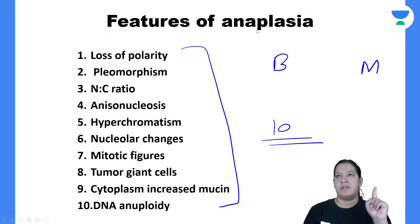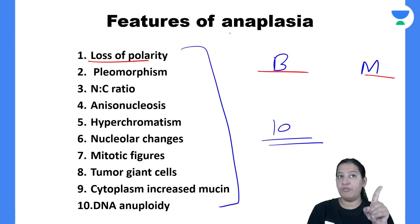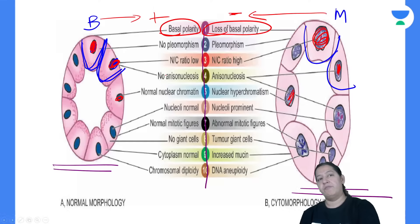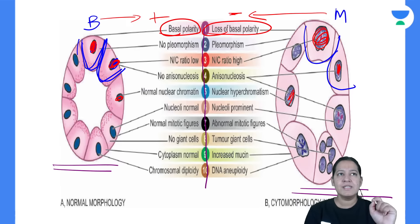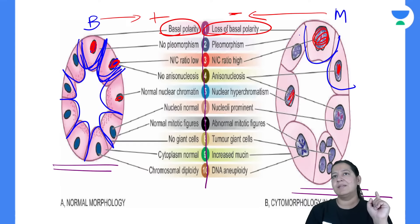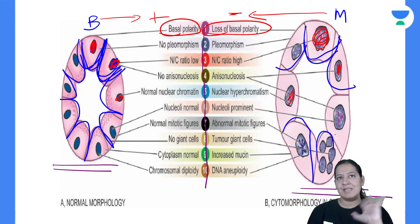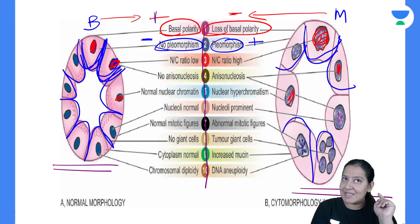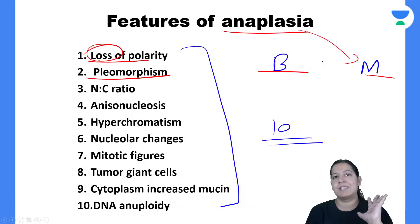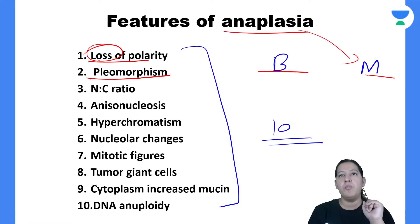Loss of polarity is a feature of malignancy. The second feature is pleomorphism — variation in shape and size. In benign tumors all cells are of the same size, so pleomorphism is absent. In malignant tumors, some cells are large, some small, some very large — pleomorphism is present.